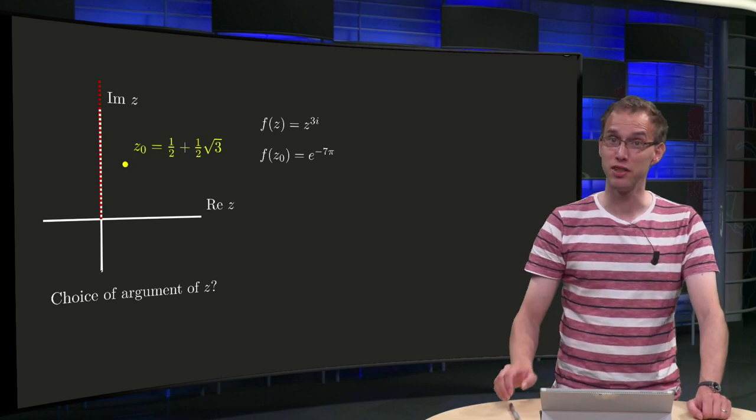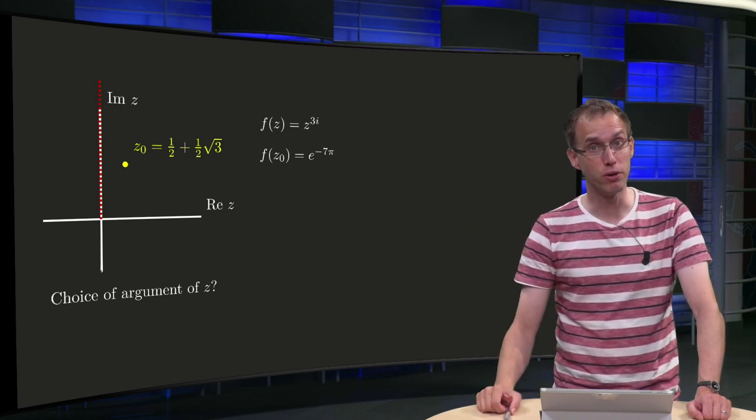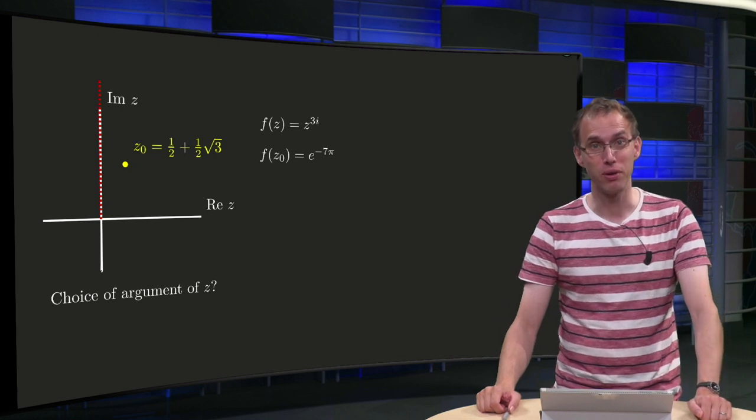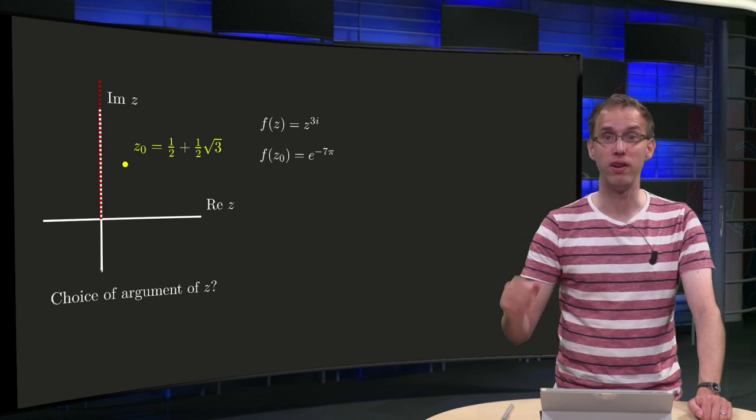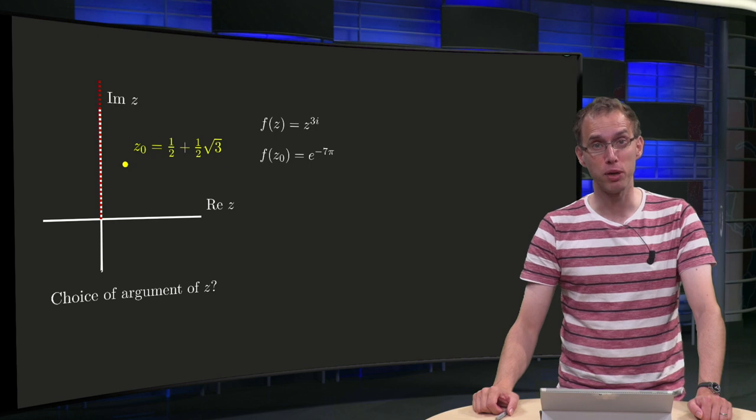A power function like this one, z to the power 3i, is in general multivalued. In order to make it single-valued you have to pick a certain branch of the logarithm or equivalently you have to specify between which values the argument of z is.